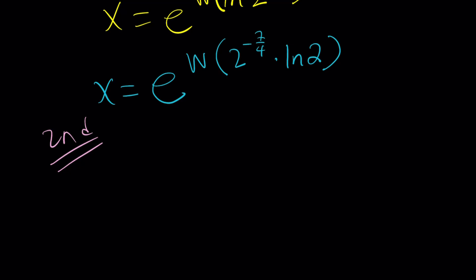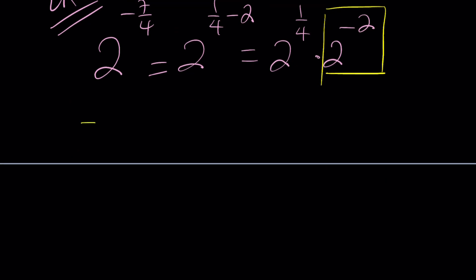Here's how it goes. We have 2 to the power negative 7 over 4. First of all I'm going to write it as 2 to the power 1 fourth minus 2. You might be wondering why, because there's something about the 2 to the negative 2 and 1 fourth. We're going to separate them.